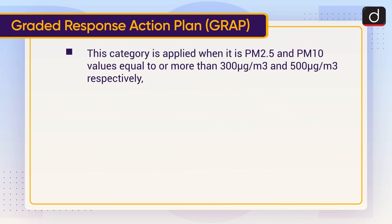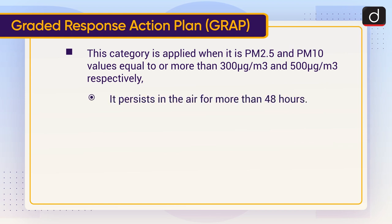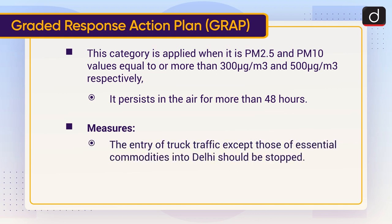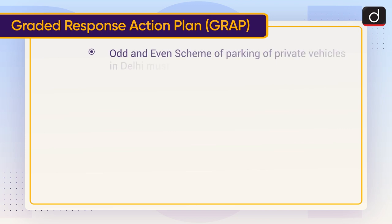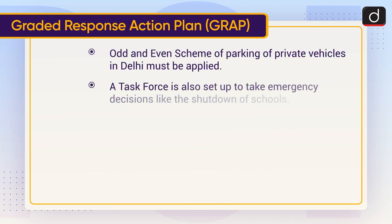The first GRAP category is Severe Plus or Emergency. This is applied when PM2.5 values equal or exceed 300 micrograms per cubic meter of air and PM10 values equal or exceed 500 micrograms per cubic meter, persisting for more than 48 hours. Measures include: stopping entry of truck traffic except essential commodities into Delhi, halting all construction activities, applying odd-even scheme for parking of private vehicles, and setting up a task force to take emergency decisions like shutdown of schools.